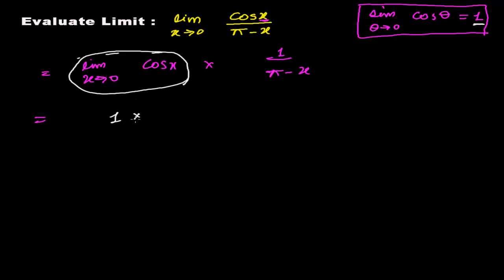So I can put here 1, and then times 1 over pi minus x. Since x tends to 0, we've already plugged the value, so it will be 1 over pi minus 0, which is 1 over pi. That's our answer.